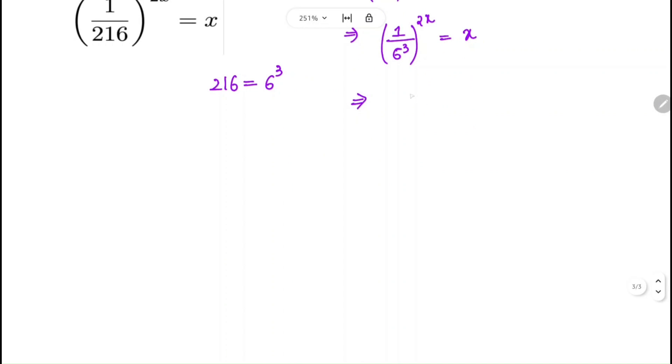From the law of exponents, we can write this as (1/6)^(6x) = x.